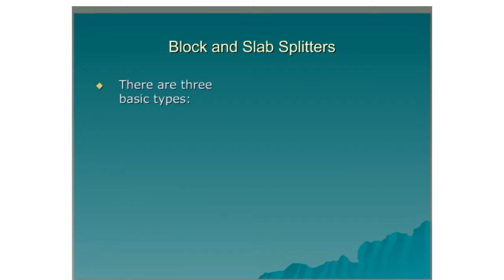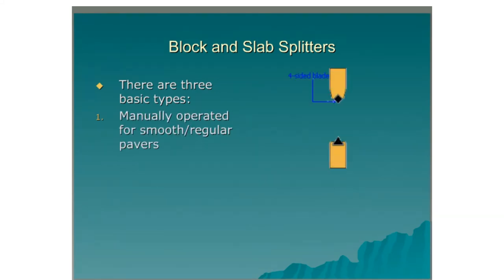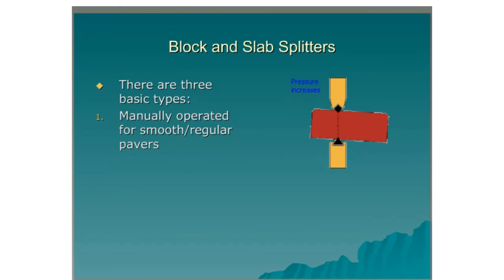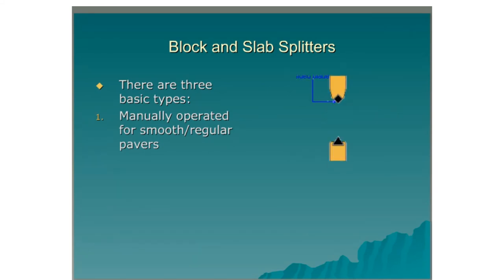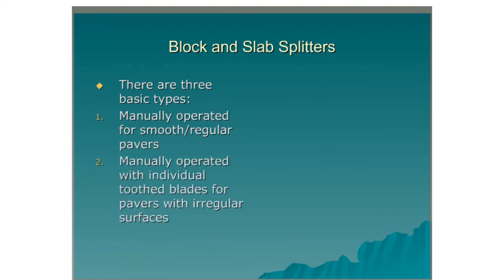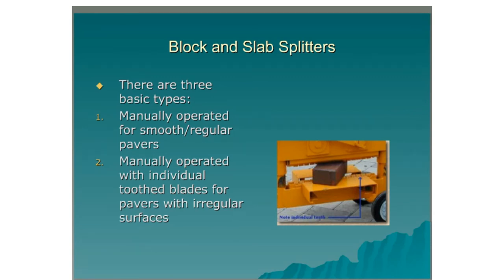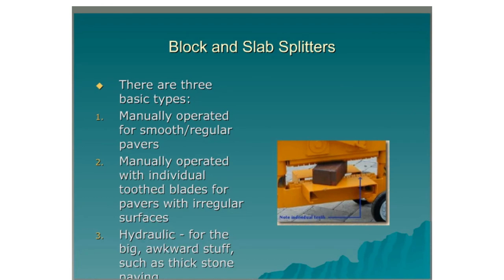Block and slab splitters. There are three basic types. The first is the manually operated type for smooth or regular pavers. These have three and four sided blades which are rotatable — the brick is placed in between them, pressure is applied using a lever, the blades come down and compress and snap the brick. The second type is manually operated with individual toothed blades for pavers with irregular surfaces, as seen in the photograph. The third type is hydraulic, used for big awkward materials such as thick stone paving.